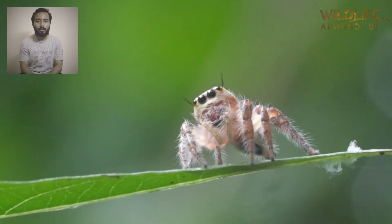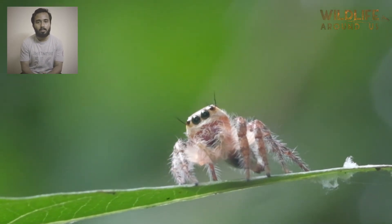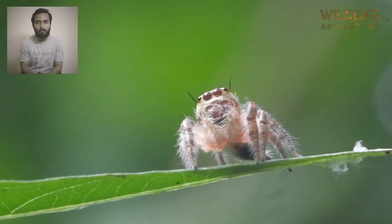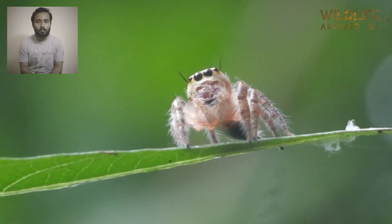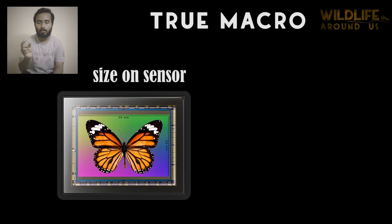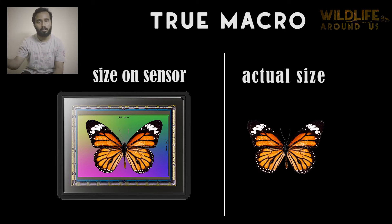Before going into all the complex things about macro photography, let us discuss some of the basic things that I will be using in all my upcoming videos. First of all, we must know what a macro photograph is. Technically, macro photography is that branch of photography where the size of the object projected on a sensor is equal to or larger than the real size of the subject in the field.